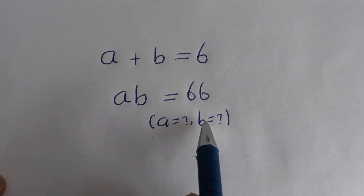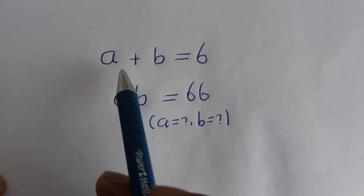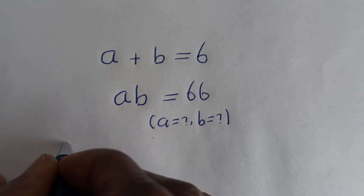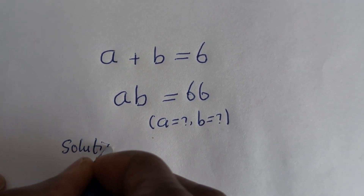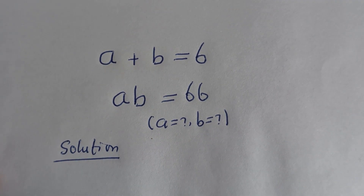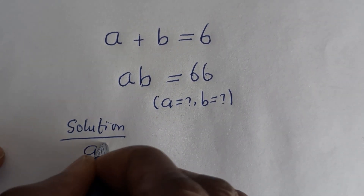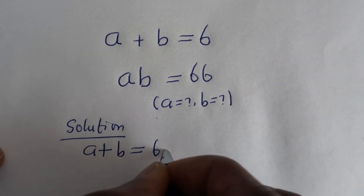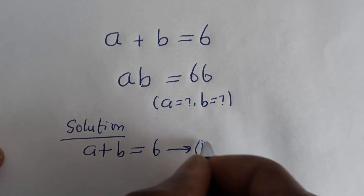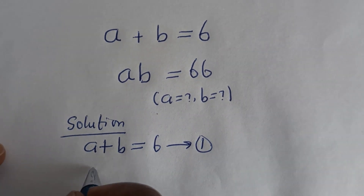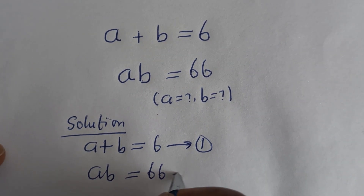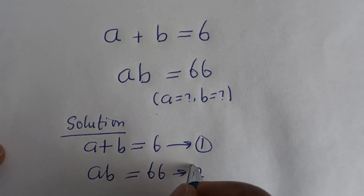How to solve for A and B in this equation? A plus B is equal to 6 — let us call this equation 1. AB is equal to 66 — let us call this equation 2.